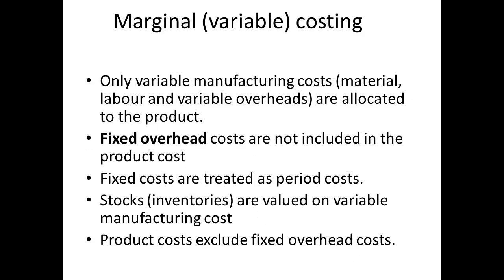With marginal costing, the fixed overheads are not allocated to the product. Only the variable manufacturing costs, usually materials and labour, are allocated to the product. Any fixed costs are treated as period costs, with inventory being valued at the variable manufacturing cost.